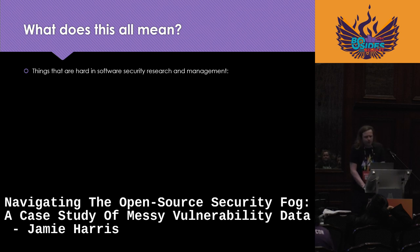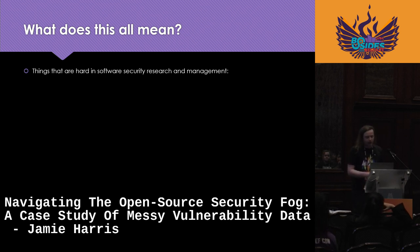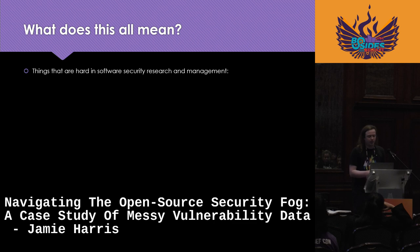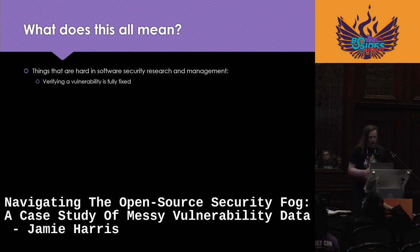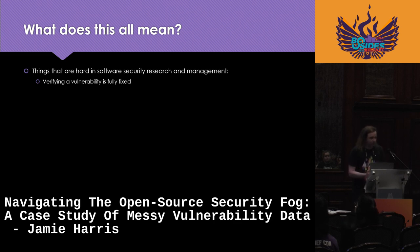What meaning can we take from all that? What's good about all this confusion is that in one single example, it nicely encapsulates a lot of the things that we at Synopsys CyRC end up coming across when researching and reporting vulnerabilities — all the things that are hard about software security research and management. We don't usually find them all in one single vulnerability, but in this one we did. So it ends up being a nice example of the things that are difficult and could go wrong. Things like verifying a vulnerability is fully fixed — with some of those disclosures, it likely wasn't fully done.